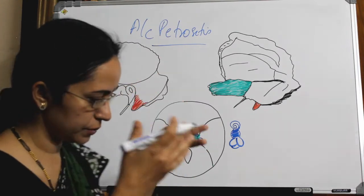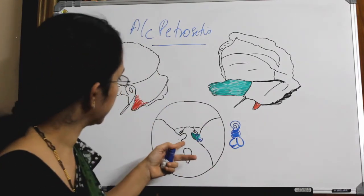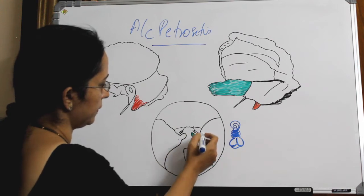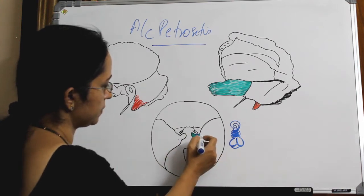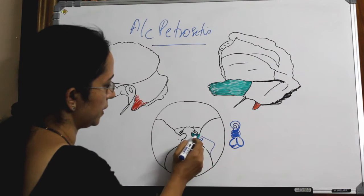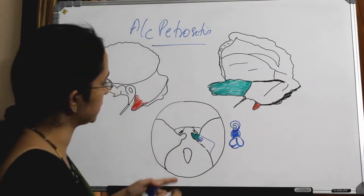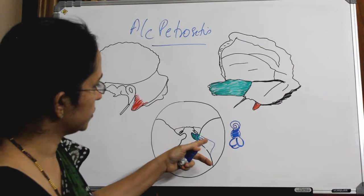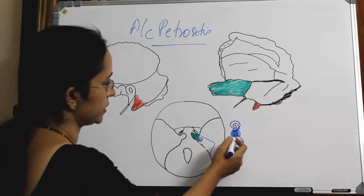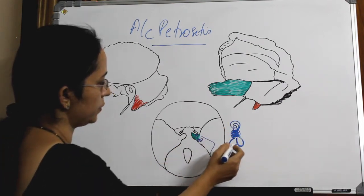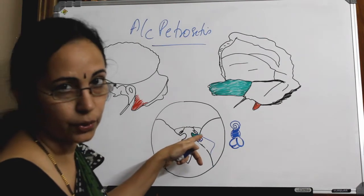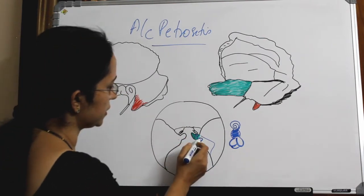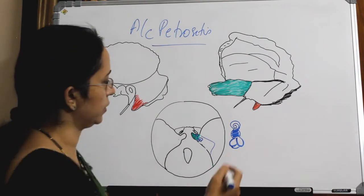When you see the skull from inside, this is how much the petrous temporal bone extends, and this is the petrous apex. To know the connection with the cochlea, vestibule, and semicircular canal, I have drawn it here. So here comes the cochlea, the vestibule, and posteriorly the semicircular canal.